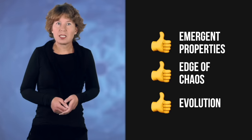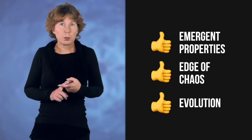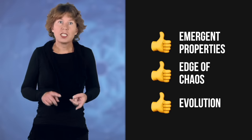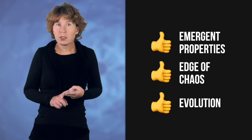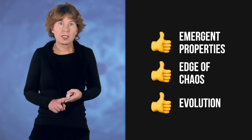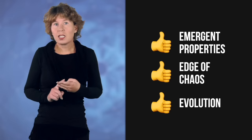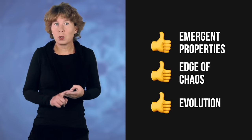That makes three characteristics of complex systems. Emergent properties and behavior, the more the more complex, inching towards the edge of chaos, the closer the more complex, and the ability to learn and adapt, the better the more complex.